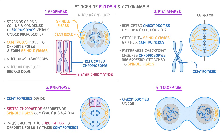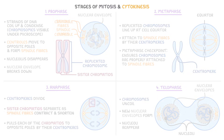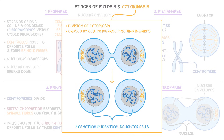Finally, in telophase, the chromosomes uncoil back into their thread-like form at each pole of the cell. New nuclear envelopes form around each set of chromosomes, and the nucleoli reappear, giving one cell with two identical nuclei. After mitosis is complete, cytokinesis occurs — the division of the cytoplasm — caused by the cell membrane pinching inwards, resulting in two genetically identical daughter cells, each with their own nucleus and their own set of organelles.